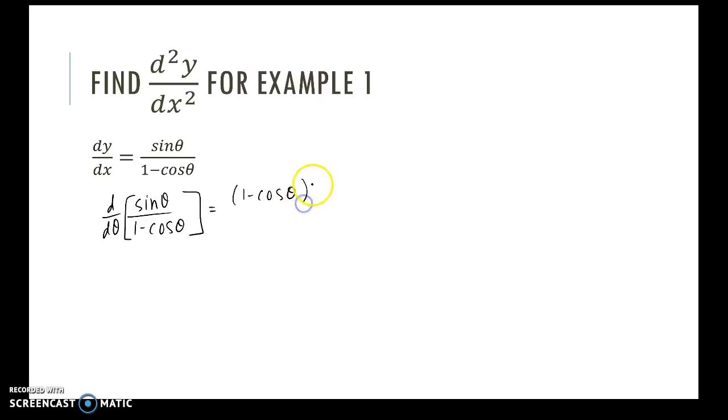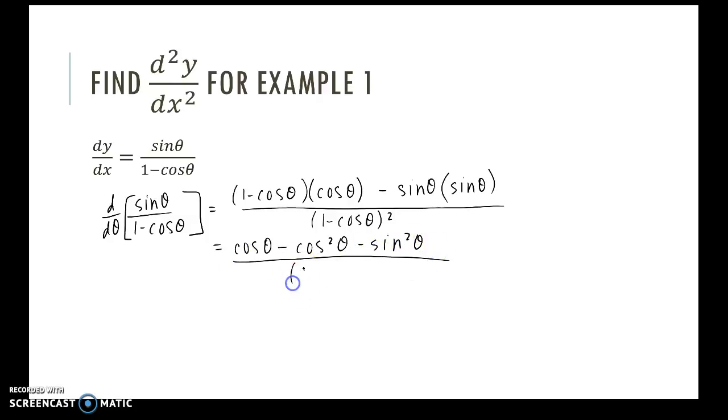Bottom times the derivative of the top, which is positive cosine. Minus the top function times the derivative of the bottom function. Derivative of the bottom function is positive sine theta, all over bottom function squared. I'm going to distribute my cosine. So I get cosine of theta minus cosine squared theta. Minus sine squared theta all over this quantity squared.